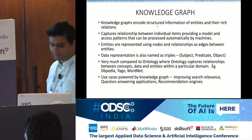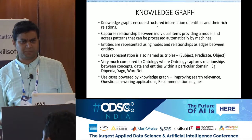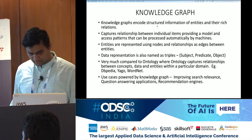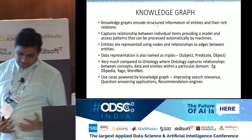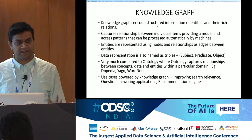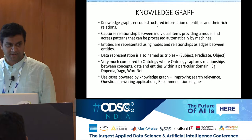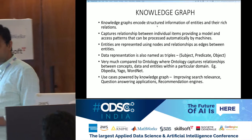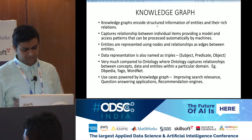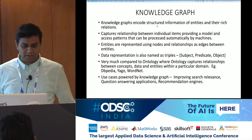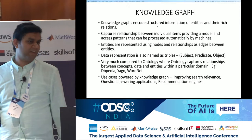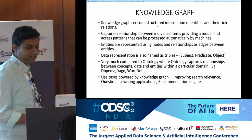For a basic introduction to knowledge graphs — assuming most students have a computer science background and know graph theory — knowledge graphs encode structured information of entities and capture relationships among them. The word 'structured' is important because you can only represent connected data in a graph. It captures relationships between individual items, providing a model and access patterns, with many graph algorithms available to query the stored data.